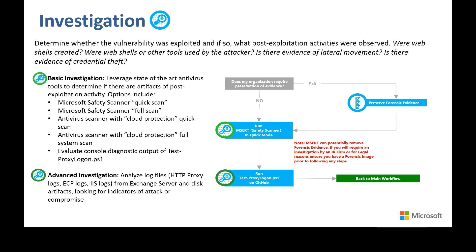During the investigation phase, which can be done in parallel to the mitigation phase, it is critical to consider whether your organization has an obligation to preserve forensic evidence and what kind of investigation you need to perform. A basic investigation would simply be to run the MSERT or Safety Scanner along with evaluating the console output of the Test-ProxyLogon script, which can be downloaded from the CSS-Exchange GitHub repository. We recommend running MSERT in quick mode the first time, allowing for a faster scan of important directories to determine whether to pivot to a more advanced investigation.